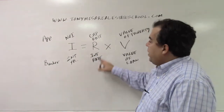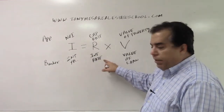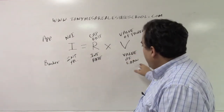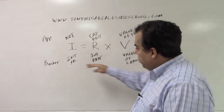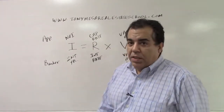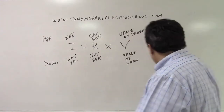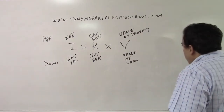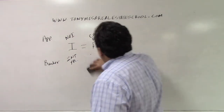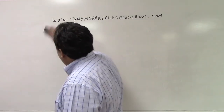For Irv the Banker: the I stands for the yearly interest, the R is the interest rate written as a decimal number, and the V is the value of the loan. You're dealing with loans here with Irv the Banker.